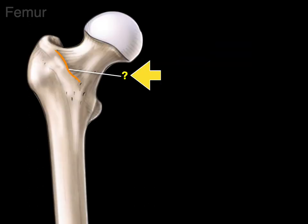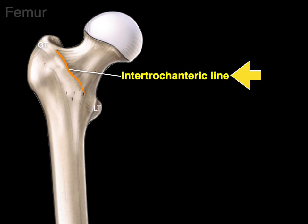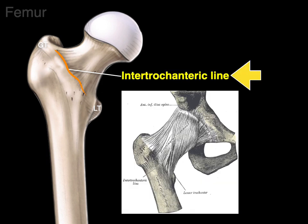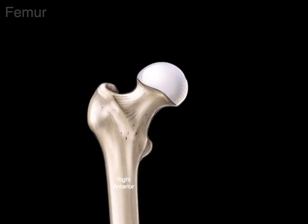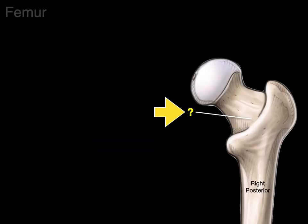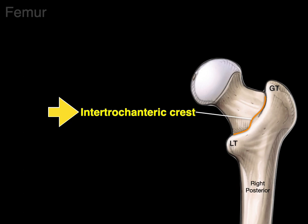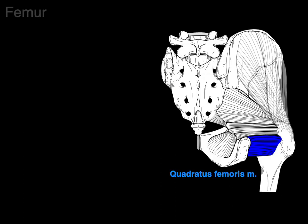We have this line that goes between the greater and lesser trochanter — it's called the intertrochanteric line. This line is one of the attachments for the anterior part of the joint capsule of the hip joint. On the posterior side, there is a ridge or crest between the greater and lesser trochanter called the intertrochanteric crest. It's also an attachment for the posterior part of the joint capsule, and serves as an attachment for the quadratus femoris, which courses from the ischium to the intertrochanteric crest.